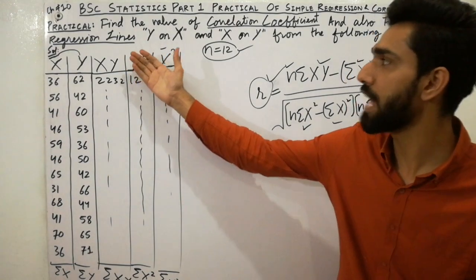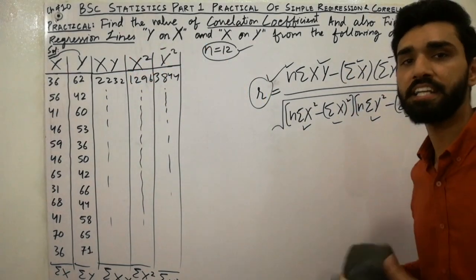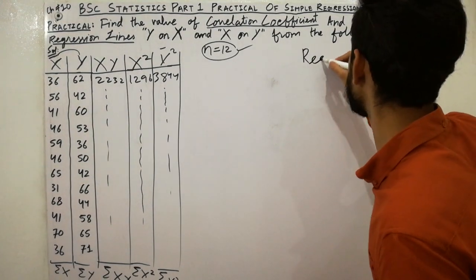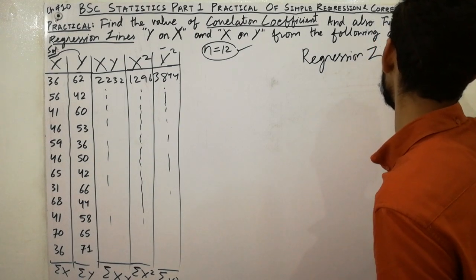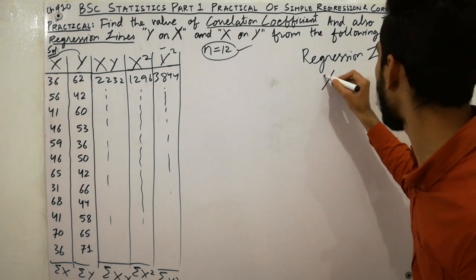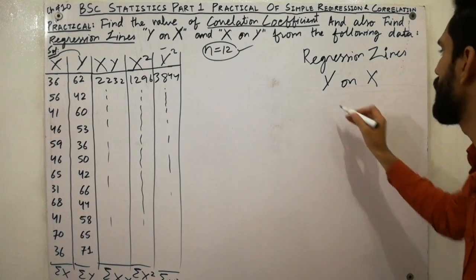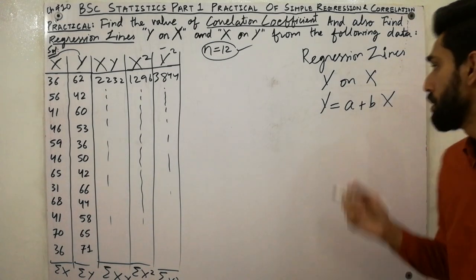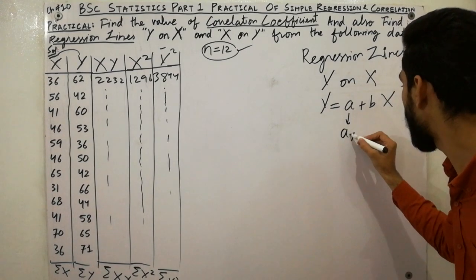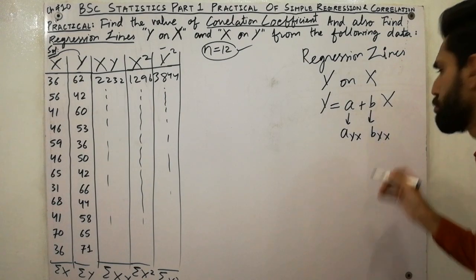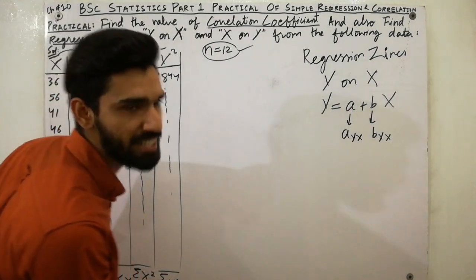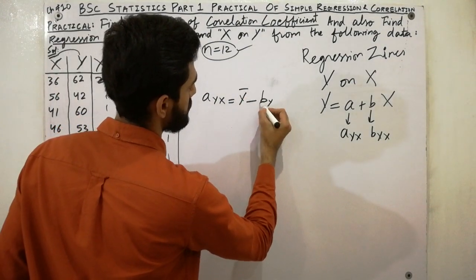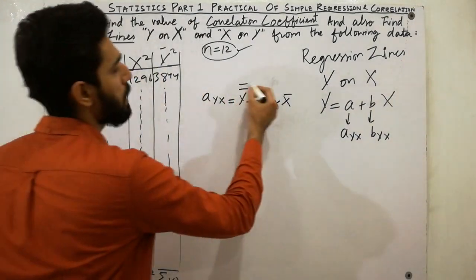Now the next step is the regression line y on x. The regression equation for y on x is: y = a + bx, where a and b are parameters. Here a is denoted a(yx) and b is denoted b(yx). The formula for a(yx) is: ȳ minus b(yx)·x̄. You can easily calculate ȳ and x̄ to find a.